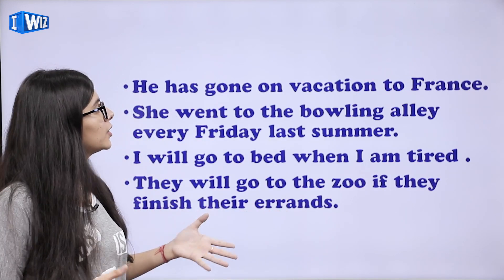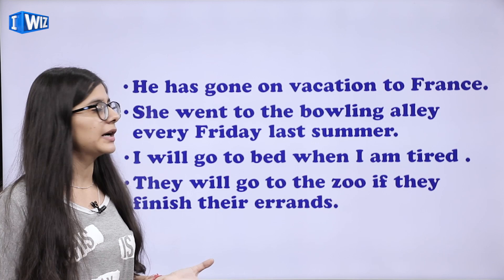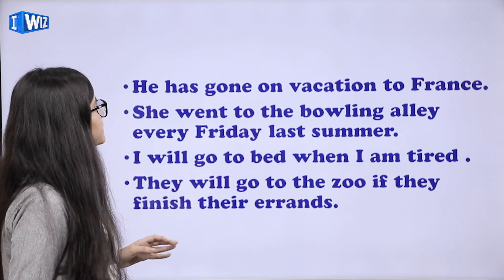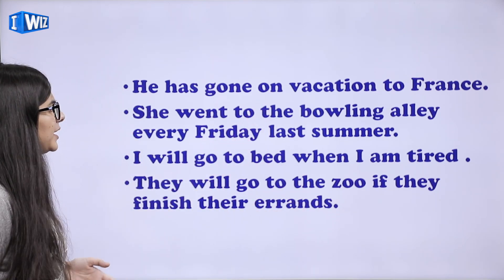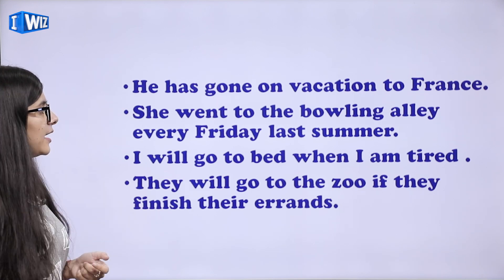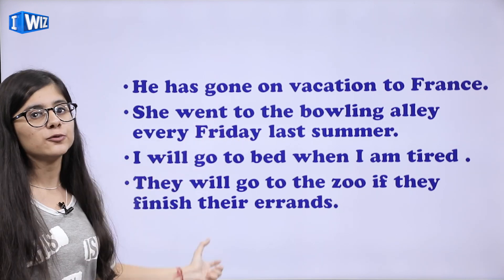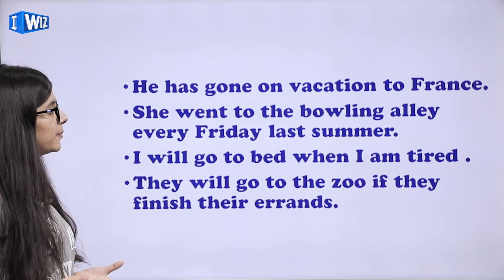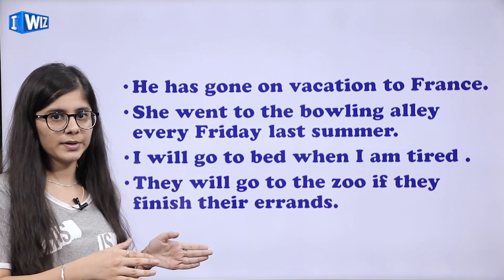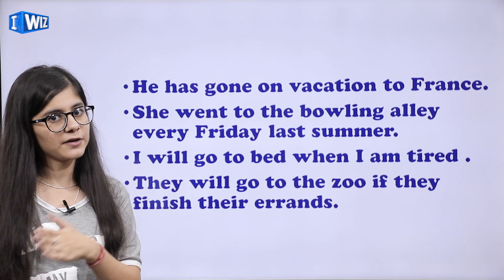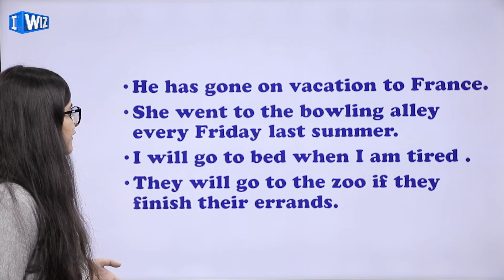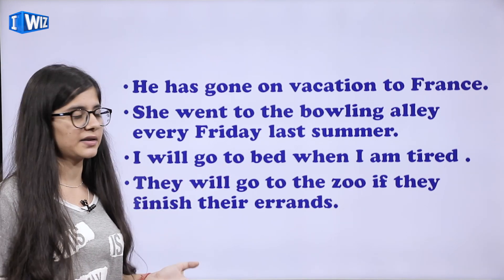For example: He has gone on vacation to France — movement wali hai, vacation pe gaya hai, toh 'on' use kiya. She went to the bowling alley every Friday last summer — went 'to' — movement wali hai. I will go to bed when I am tired — main thak jaunga toh main sone chala jaunga, bed pe ja raha hai, toh 'go to bed'. They will go to the zoo if they finish their errands.